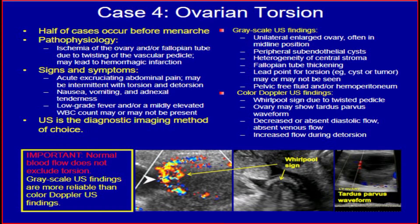Ovarian torsion: half of cases occur before menarche. Pathophysiology: ischemia of the ovary and/or fallopian tube due to twisting of the vascular pedicle, which may lead to hemorrhagic infarction. Signs and symptoms: acute abdominal pain (may be intermittent with torsion and detorsion), nausea, vomiting, and adnexial tenderness. Low-grade fever or mildly elevated white blood cell count may or may not be present. Ultrasound is the diagnostic imaging method of choice. Grayscale findings: unilateral enlarged ovary often in midline position, peripheral subcortical cysts, heterogeneity of the central stroma, fallopian tube thickening, and possible lead point. Pelvic free fluid or hemoperitoneum may be present.